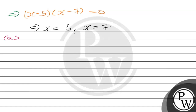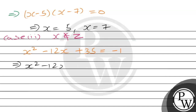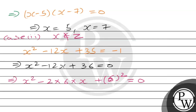Now we have our second case, when x does not belong to integers, meaning x is not an integer. So ⌊x⌋ + ⌊-x⌋ equals minus 1. This implies x squared minus 12x plus 35 equals negative 1, which means x squared minus 12x plus 36 equals 0. This implies x squared minus 12x plus 36 equals 0, giving x equals 6.